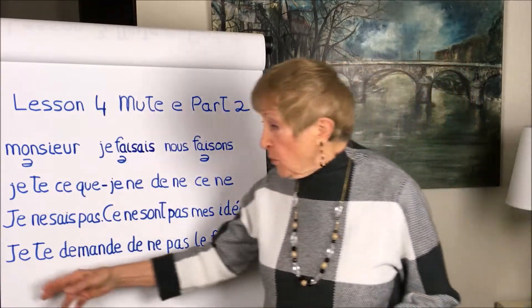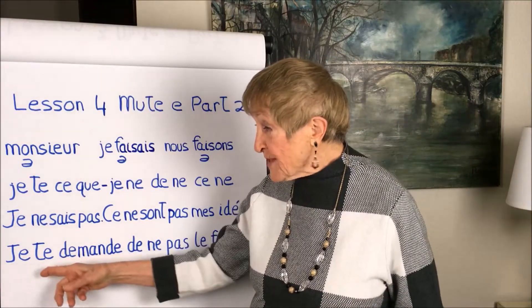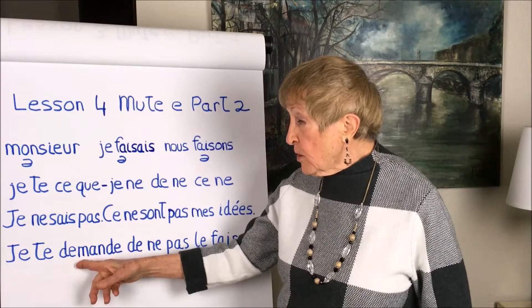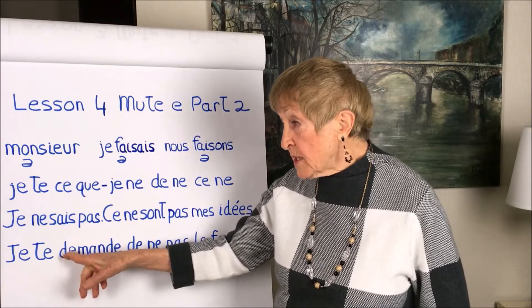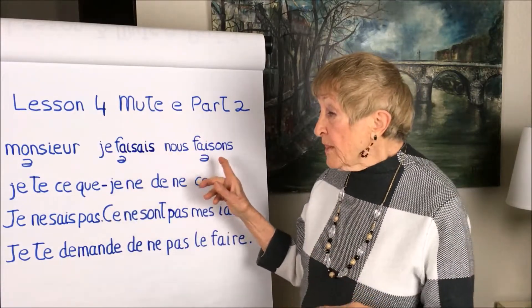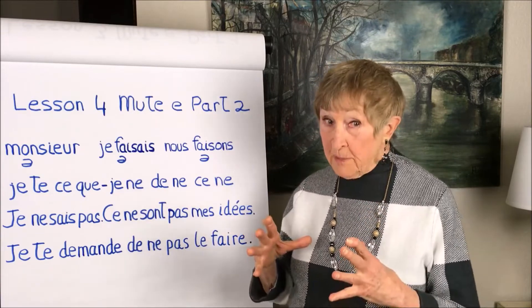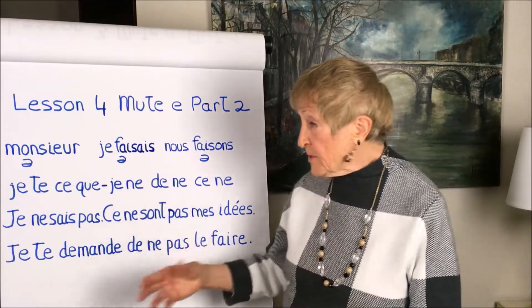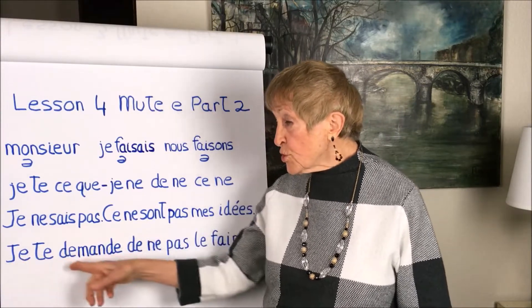Here we have a sentence with a whole lot of mute-e's, so let's take a look. We have je and te, and we already know we're supposed to pronounce that one 'sht.' Here we have another mute-e, but we can drop it — why? Because there's only one consonant in front of it. Remember from the previous lesson: if there are two consonants in front of a mute-e you have to keep it, but if there's only one, you can drop it. So here there's only one consonant, so you can drop that one, giving us 'shtudemand.'